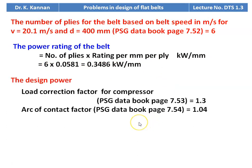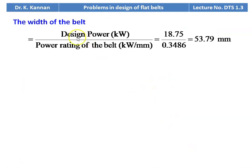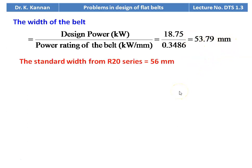Design power: load correction factor for compressor from page 7.53 = 1.3 (intermittent load). Arc of contact factor for 170 degrees from page 7.54 = 1.04. Design power = 15 × 1.3 / 1.04 = 18.75 kilowatts. Belt width = 18.75 / 0.3486 = 53.79 mm. From the R20 series (page 7.20), the next higher standard value is 56 mm.